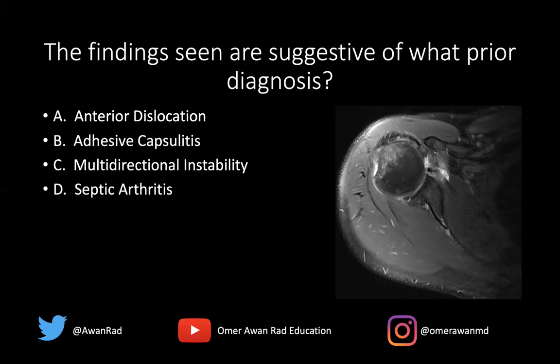Multidirectional instability would mean we get findings of both anterior and posterior dislocation. So maybe a Hill-Sachs lesion but a reverse Bankart lesion — something to suggest that instability is not just in one direction but in various directions.